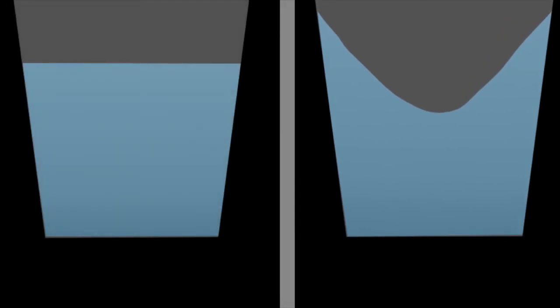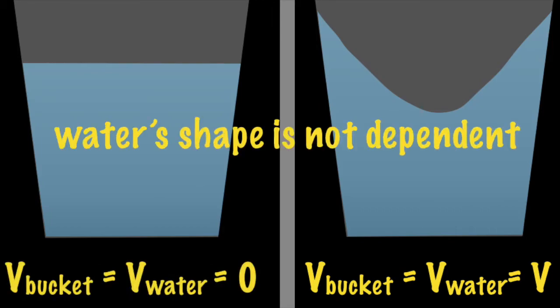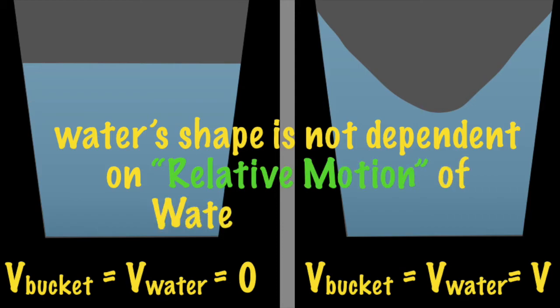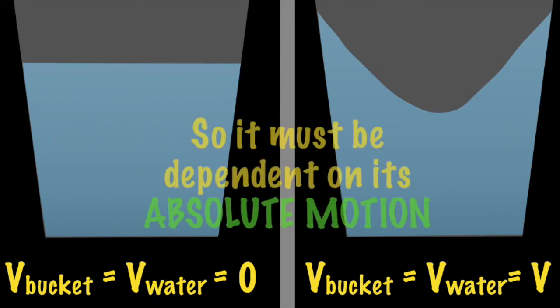If we compare the two cases, water and bucket are moving at the same rate, but we observe a concave shape only in the second case. So the shape of the water surface is not dependent on the relative motion of water and the bucket. So it must be dependent on its absolute motion.